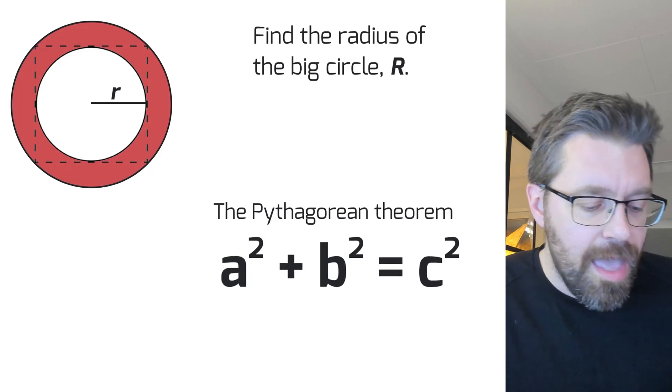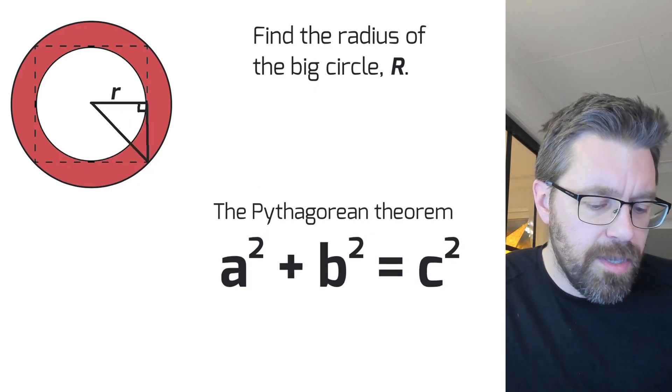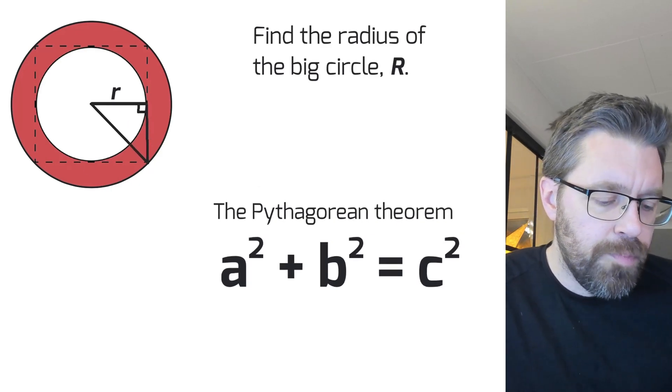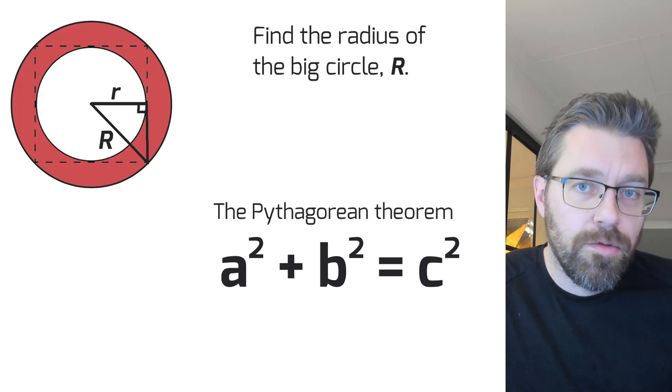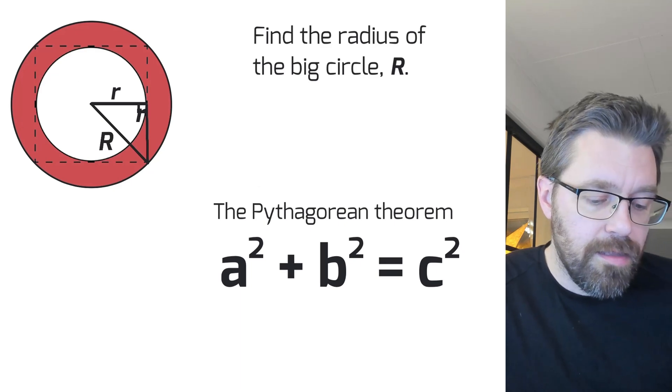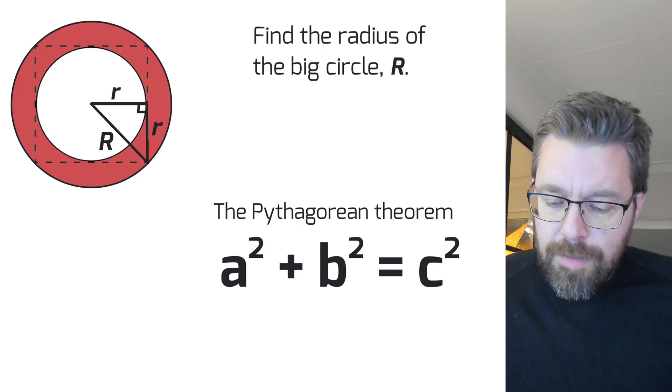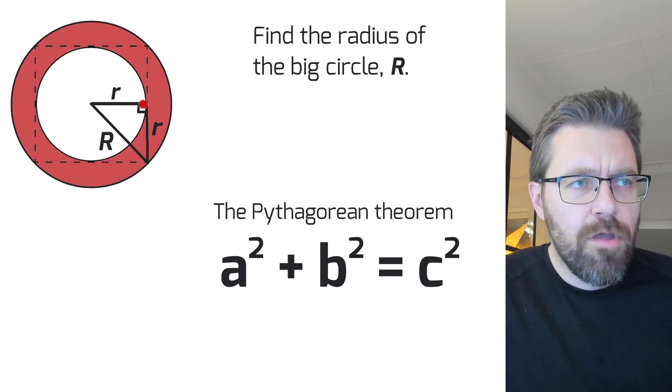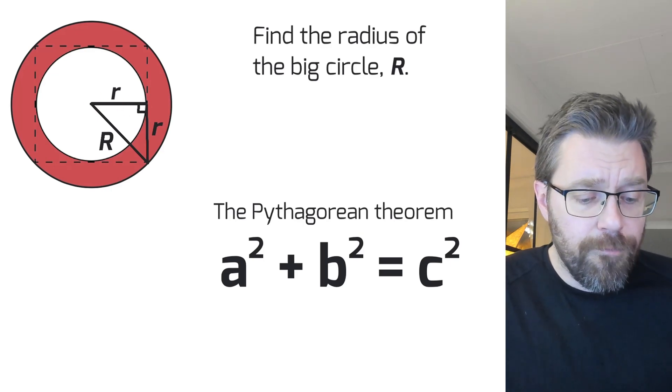I can do it in the picture like this and put the big R on the diagonal and the little r on this side, because the radius of the small circle is this length and of course from the middle and down here, and then it also is the side here.